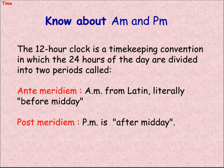Know about a.m. and p.m. The 12-hour clock is a timekeeping convention in which the 24 hours of the day are divided into two periods called: Ante Meridiem (a.m.), from Latin, literally meaning 'before midday,' and Post Meridiem (p.m.), meaning 'after midday.'